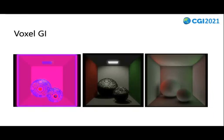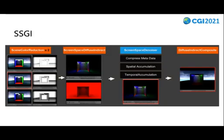VoxelGI was first proposed in 2011. In the past decade, many variants were developed on it. The core idea is to use voxels to discretize the scene and use the discrete information to calculate the global illumination. However, real-time voxelization is still very slow and is prone to light leakage. Currently, SSGI is the fastest method to calculate global illumination. It uses screen space information, but due to the lack of information in screen space, SSGI will get a very big deviation from the actual result in many cases.